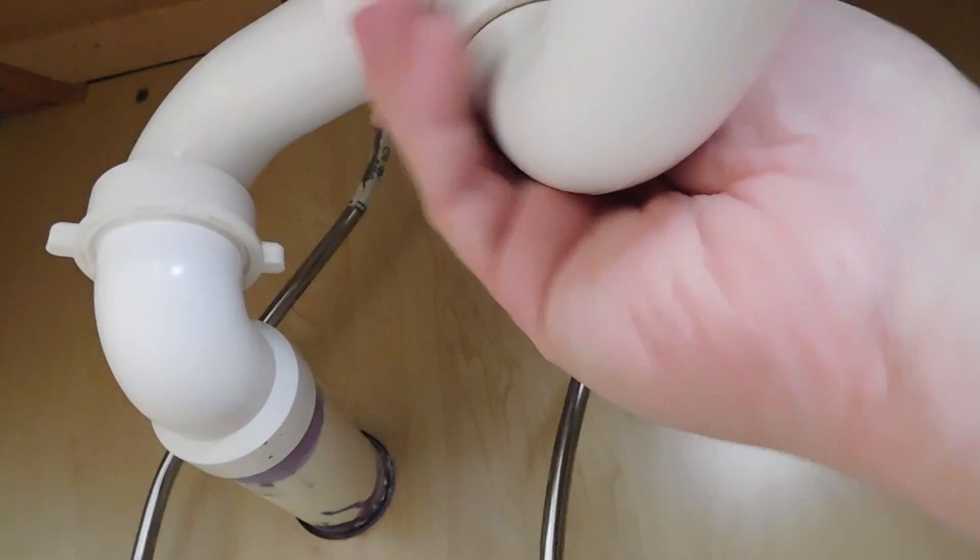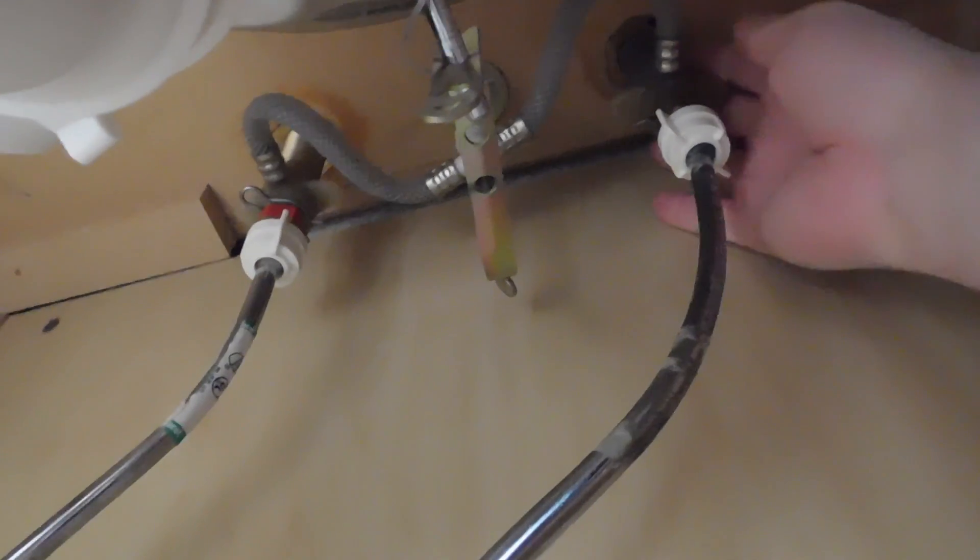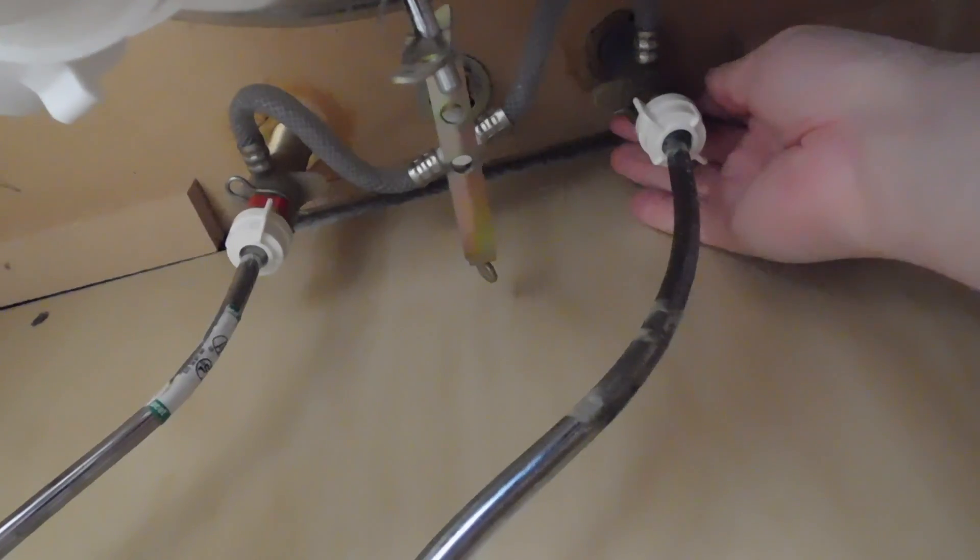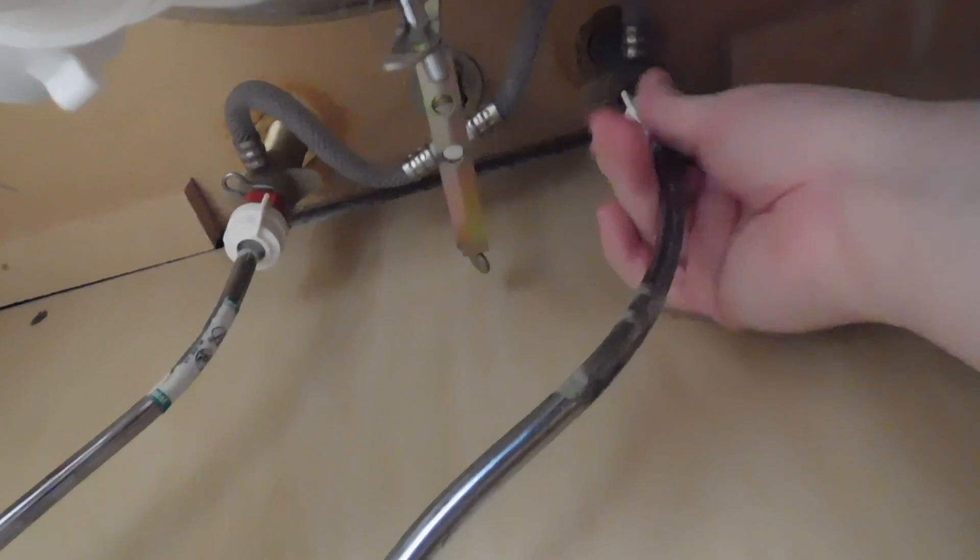Determine where the leak is coming from by using your hand and feeling for moisture around the joints. It's a good idea to start at the top and work your way down. Also keep a dry towel handy so that you may determine exactly where the leak is coming from by keeping your hands dry.